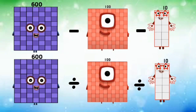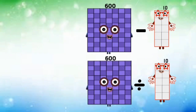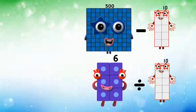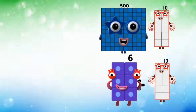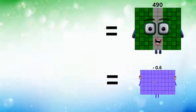600 subtracted and divided by 100 equals 506. 500 minus 10 and 6 divided by 10 equals 490 and negative 0.6.